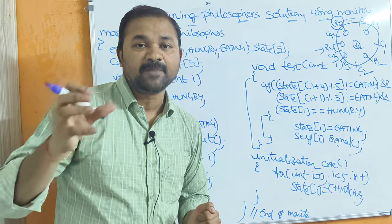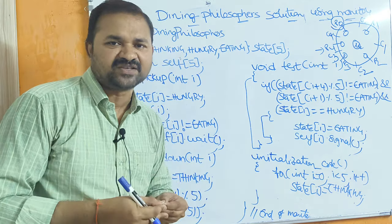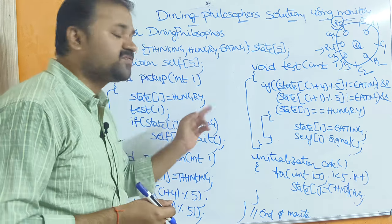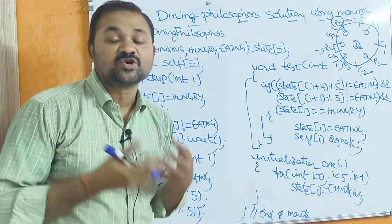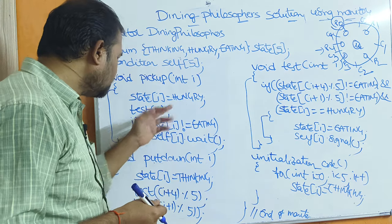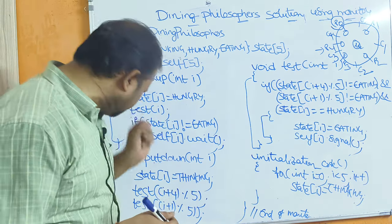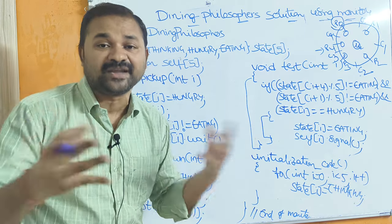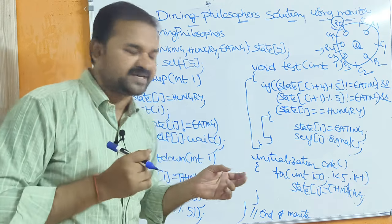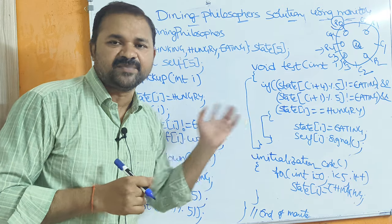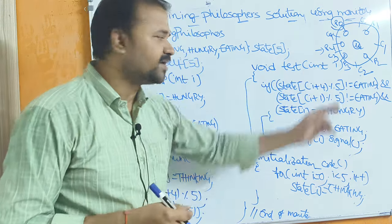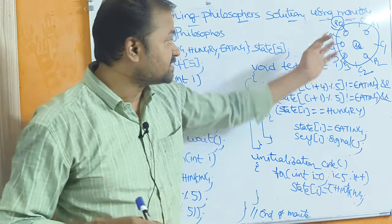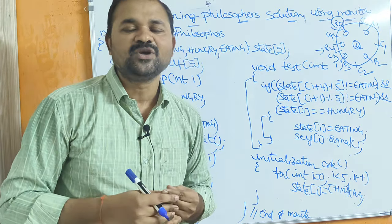Next we call the pickup procedure: void pickup(int i). Assuming P0 is calling the function, i = 0. First, P0 sets state[i] = hungry, meaning state[0] is hungry — P0 philosopher is hungry. Then P0 calls the test function. The test function checks whether the adjacent philosophers are eating or not eating. If they are not eating, the philosopher can obtain the two corresponding chopsticks.